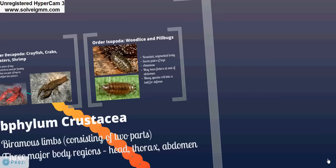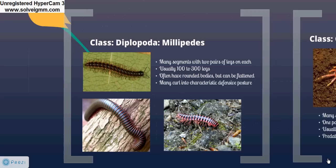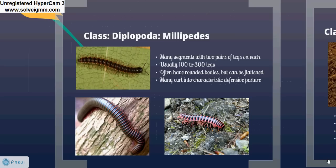The subphylum Myriapoda is made up of two major classes that are commonly confused: the millipedes and centipedes. These groups are united by having numerous body segments with one to two pairs of jointed legs on each segment, and one pair of antennae. Millipedes are strange-looking but harmless creatures that live primarily in leaf litter and decaying wood. They have many segments with two pairs of legs on each segment — usually one to three hundred legs, not one thousand as the name suggests — and they typically curl into a characteristic defensive posture when threatened.